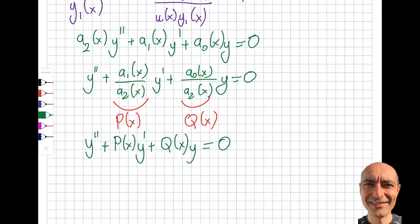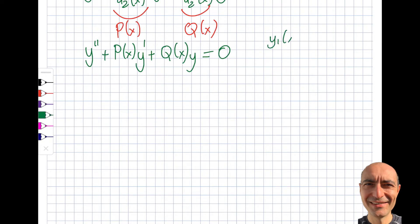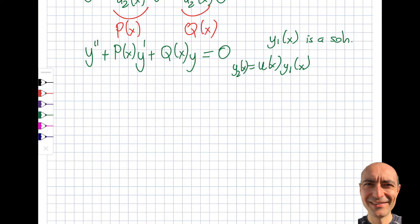Since y1(x) is a given solution, I said that y2 = u(x)·y1(x) must also be a solution. My goal is to find u(x) by plugging y2 into the differential equation. I need the first and second derivatives of y2, so let me compute those separately and then substitute. Taking the derivative by the product rule: y' = u'·y1 + u·y1'.